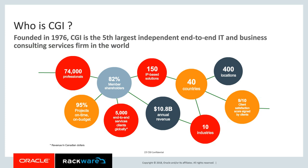82% of our members — our employees — hold shares, making them more accountable to clients. During 2015, we conducted 5,974 in-person client satisfaction assessments and received a 9 out of 10 average. We have a presence in 40 countries with 400 offices worldwide, more than 5,000 end-to-end service clients, 74,000 employees, and revenue of Canadian $10.8 billion. We have 150 IP solutions, and X2R was one of the solutions migrated with Rackware's help.